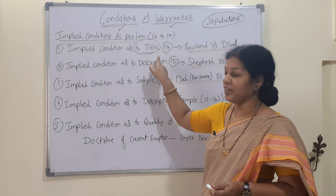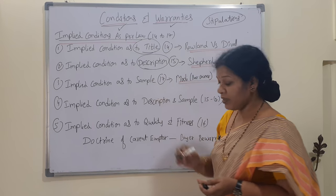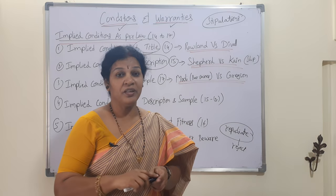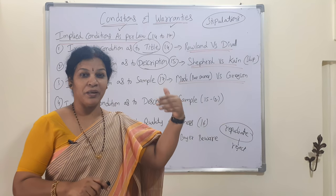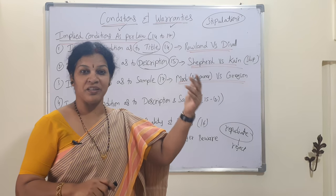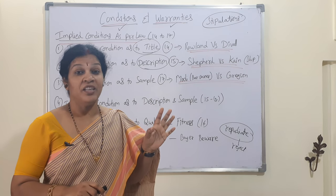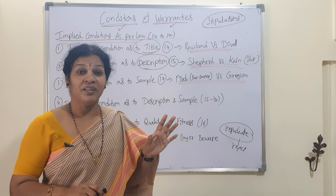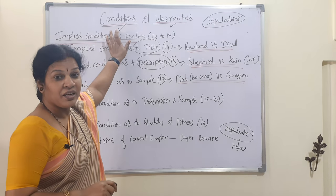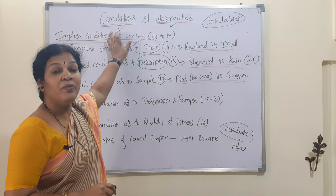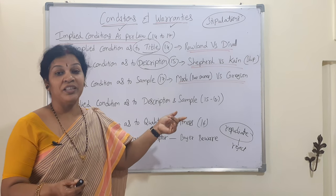The second implied condition is as to description. As per the description provided, the goods must match exactly. Suppose the seller described that a car, scooter, or asset is a certain way — according to that description, it must be so. If the goods are not as described, the condition is not fulfilled and the contract can be rejected.